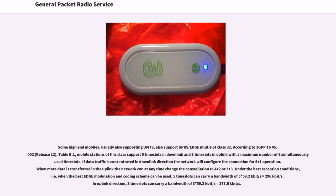Some high-end mobiles, usually also supporting UMTS, support GPRS/EGPRS multi-slot class 32. According to 3GPP TS 45.002 release 12, table B.1, mobile stations of this class support 5 time slots in downlink and 3 time slots in uplink with a maximum of 5 or 6 simultaneous time slots. If data traffic is concentrated in the downlink direction, the network will configure the connection for 5+1 operation. When more data is transferred in the uplink, the network can change the constellation to 4+2 or 3+3.